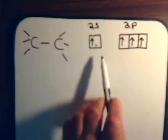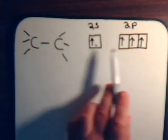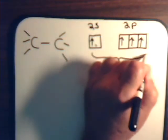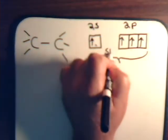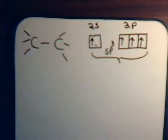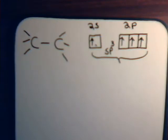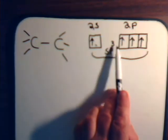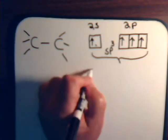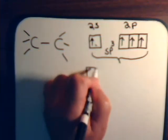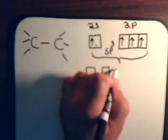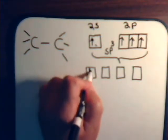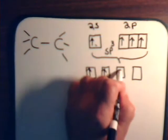And then remember what happens is the single s orbital and the 3 p orbitals combine together to give sp3 hybridized orbitals and we combine 1, 2, 3, total of 4 atomic orbitals and we get 4 equivalent molecular orbitals. When we say equivalent, they're all at the same energy level. And they all contain a single electron.